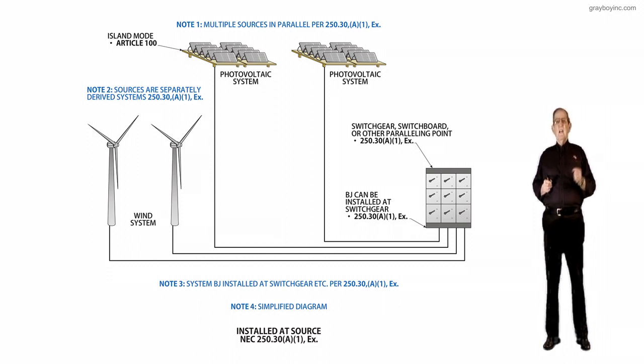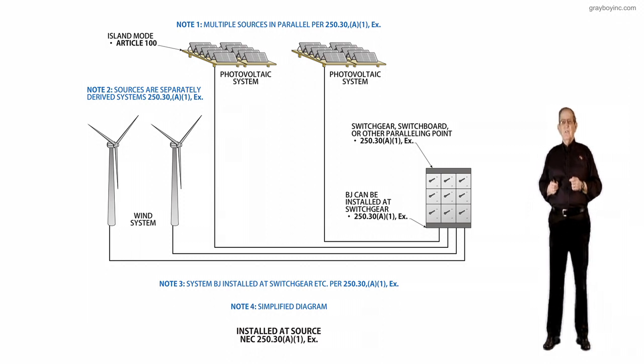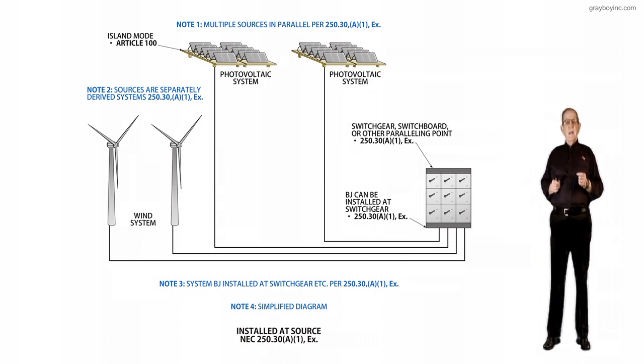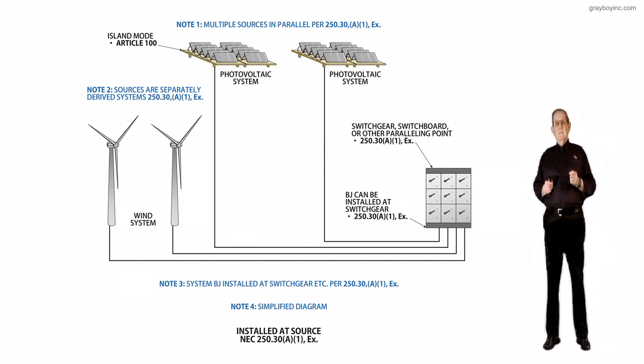Many times, like with engine generators, fuel cells, or inverters, each equipment is supplied with a main disconnect, and that would then require the system bonding jumper for system grounding at each source.